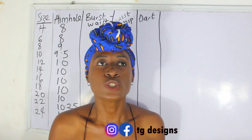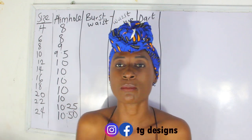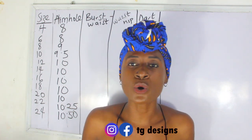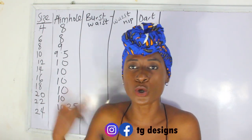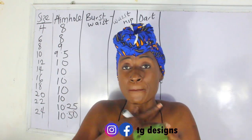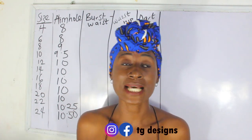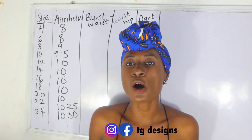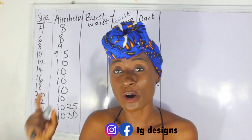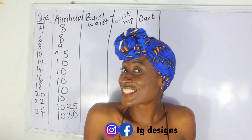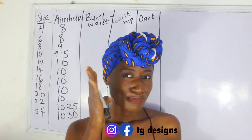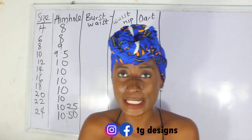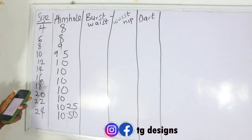The next measurement is bust to waist — that is, the distance from your bust to your waist. You need to know where to mark your bust measurements and where to mark your waist measurements when you're working with a plain fabric. It's very essential to place your measurements at the exact point, as this adds to the beauty of your dress. If your bust measurement is not sitting on the bust, the fitting won't be right.